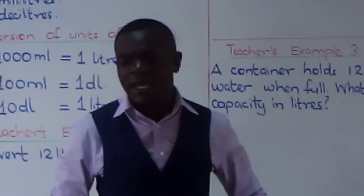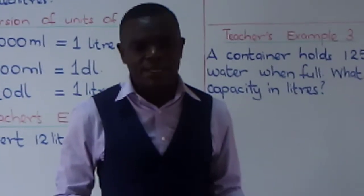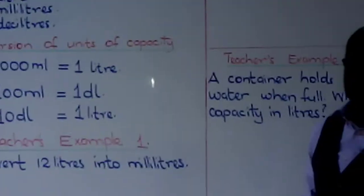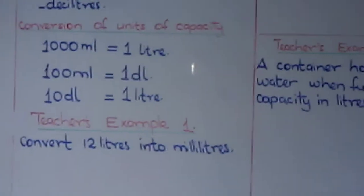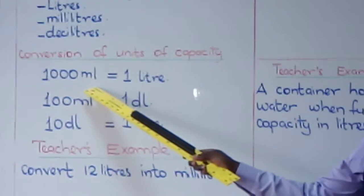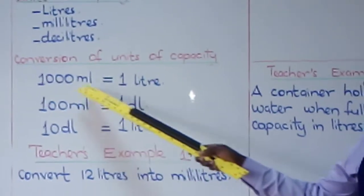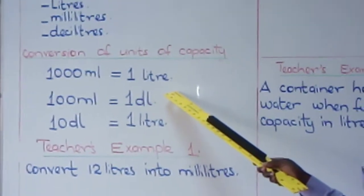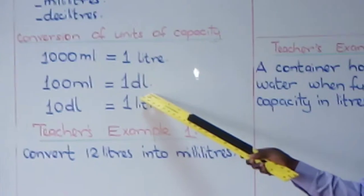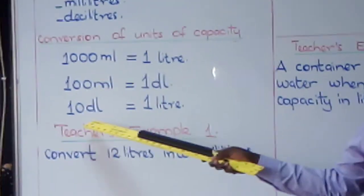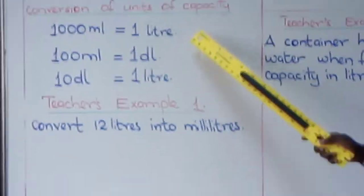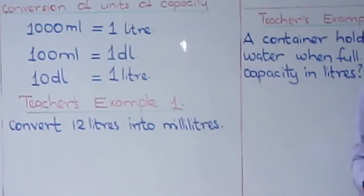Now let's look at conversion of units of capacity. I've already written it for you. Boys and girls, shall we look at the whiteboard? One thousand milliliters make one liter. Let's read together: 100 milliliters make one deciliter. Then ten deciliters make one liter. Very good — that is the table we use to convert units of capacity.